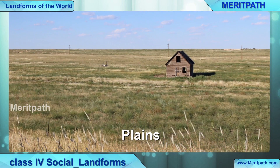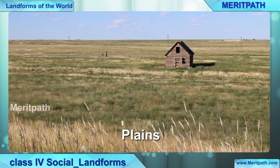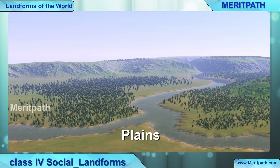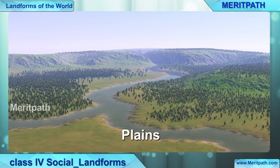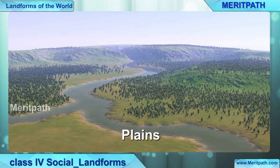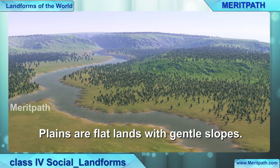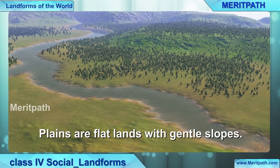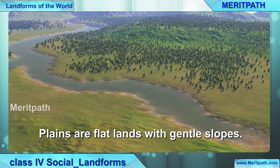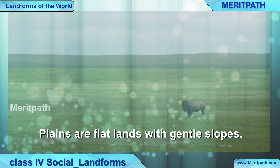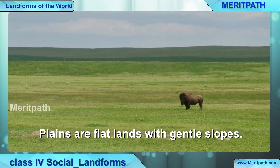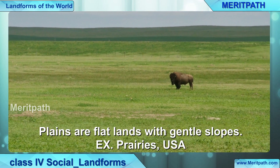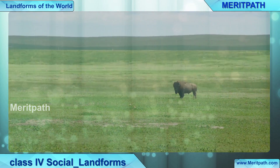Now we will learn about plains. What are plains? Plains are flat lands with gentle slopes. Rivers flowing from the mountains bring fertile soil to the plains, so crops grow well here. Plains are the thickly populated areas in the world. The Prairies of the USA is an example of a plain.